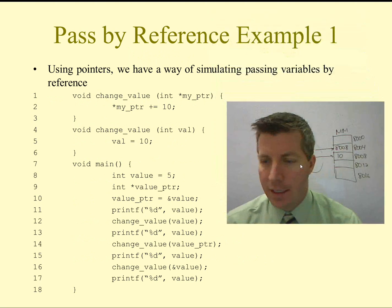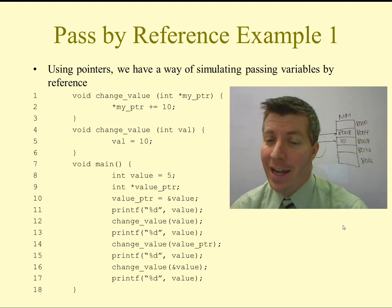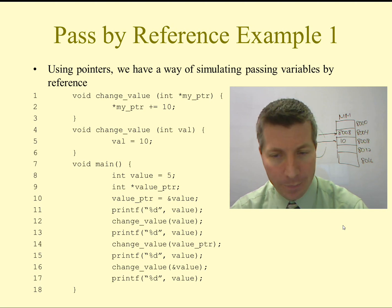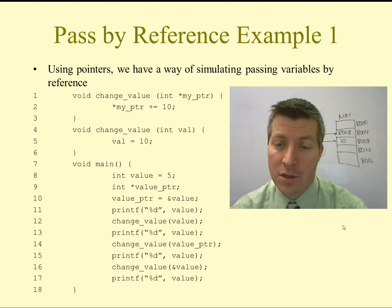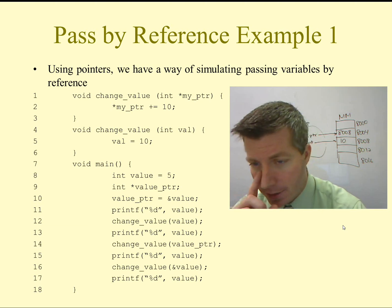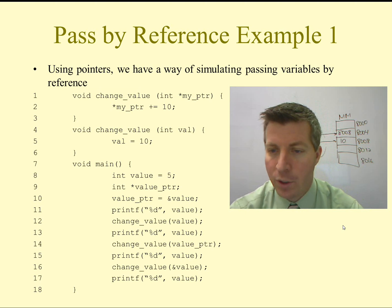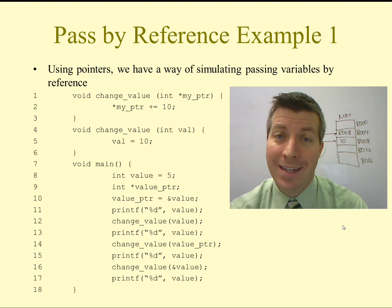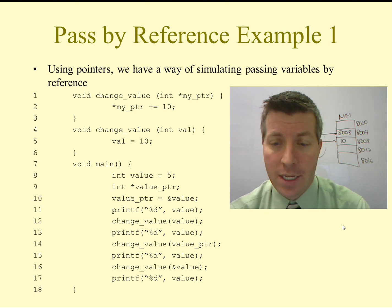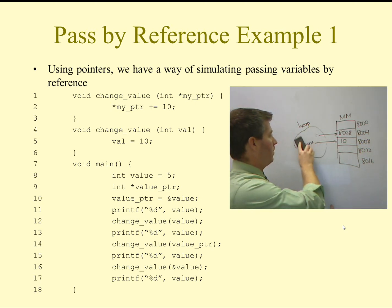Let's look at an example of how we can pass pointers into functions. On line 1, I have a function called change_value that takes a pointer as a parameter. Line 2 dereferences that pointer, adds 10 to it, and puts it back. Line 4 is another change_value function that takes just an integer as a parameter — this is called overloading. One function takes a pointer, one takes an integer. The compiler doesn't get confused because if you pass an address in, it calls the pointer version; if you pass an integer, it calls line 4. Let me draw this out in main memory to see what happens in this code.